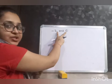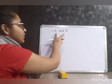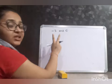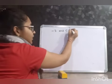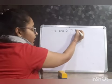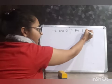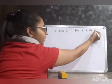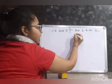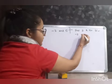I have two rational numbers, minus 3 and 0, and the question is that you have to find any three rational numbers. The question is find three rational numbers between minus 3 and 0.